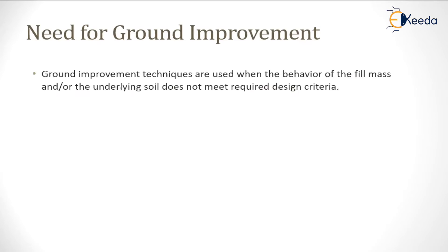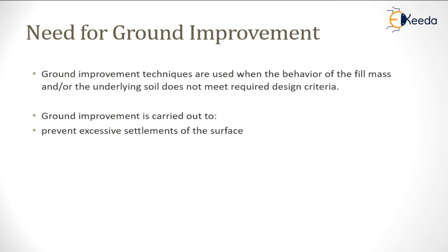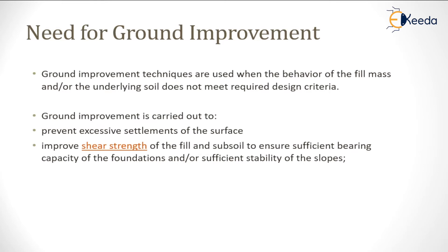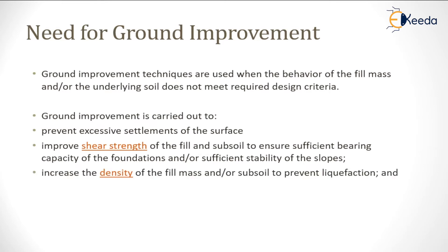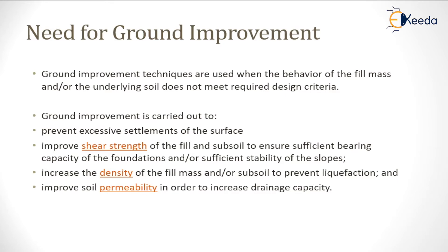Ground improvement techniques are used when the behavior of the fill mass or the underlying soil does not meet the required design criteria — meaning the soil as it exists may not be suitable for supporting a structure. We have to alter the properties of the soil to increase its bearing capacity. Ground improvement is carried out to prevent excessive settlement, improve shear strength, increase density, and improve soil permeability to increase drainage capacity.